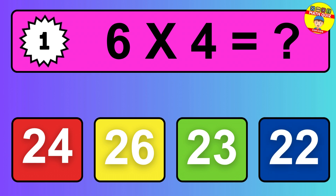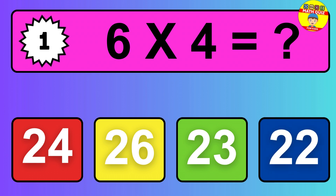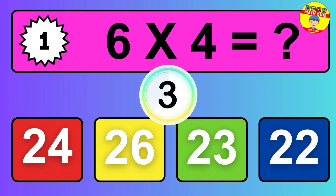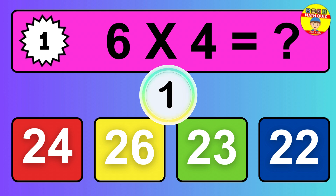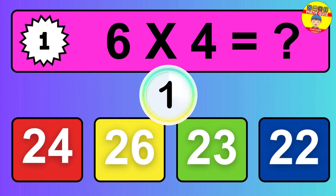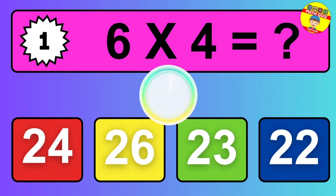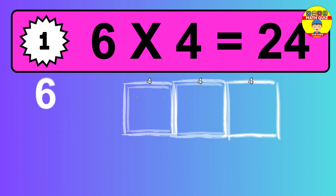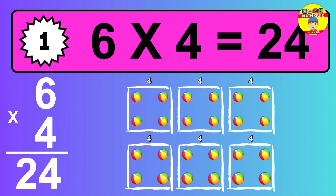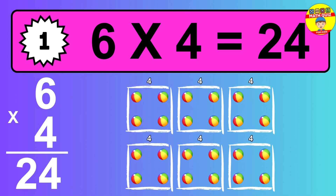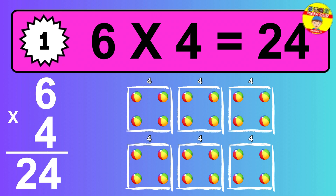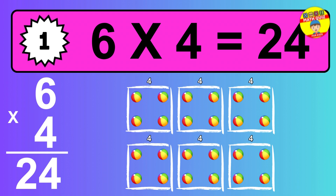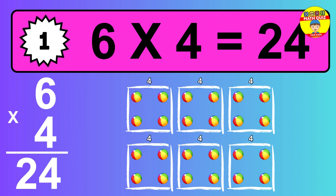Question 1. 6 times 4 equals what? So the answer is 6 times 4 is 24. To calculate, we have 6 groups with 4 balls each one. So how many balls do we have? 24 balls.